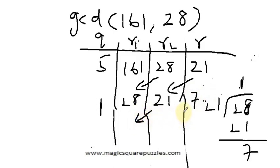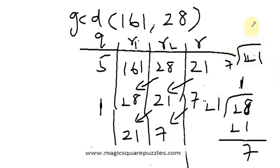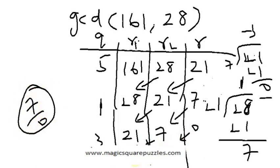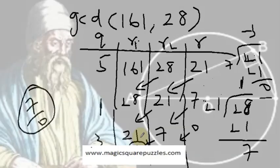Now 21 becomes the new numerator and 7 becomes the new denominator. Repeat: 21 divided by 7 goes 3 times exactly, giving remainder 0. Quotient is 3 and remainder is 0. Since we get remainder 0, the process stops. The greatest common divisor is 7. This method is called the Euclidean algorithm.